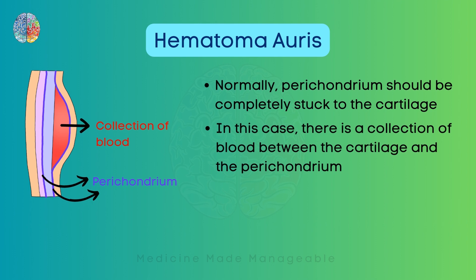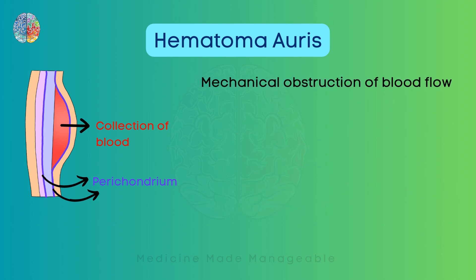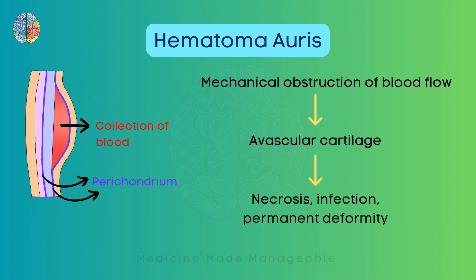Remember, the perichondrium supplies blood to the cartilage. If this collection of blood remains for a long time, it causes mechanical obstruction of blood flow from the perichondrium to the cartilage. The cartilage will not receive blood and will become avascular, which may lead to necrosis, infection, or permanent deformity.